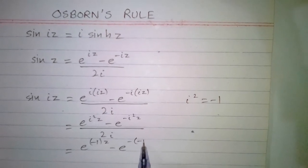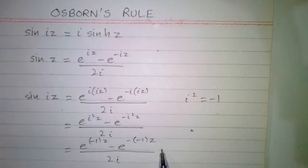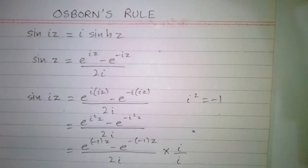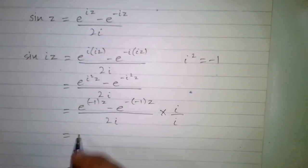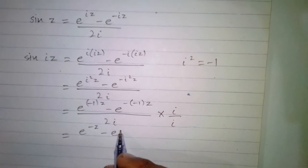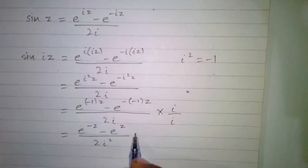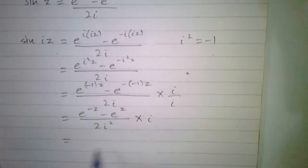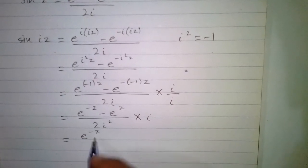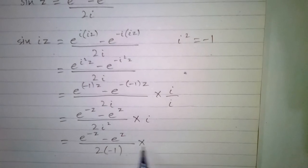Now we can multiply this fraction by iota over iota, so we have e to the power minus z minus e to the power z upon two iota squared, multiplied by iota. Again we put the value of iota squared which is minus one, giving e to the power minus z minus e to the power z upon minus two, multiplied by iota.